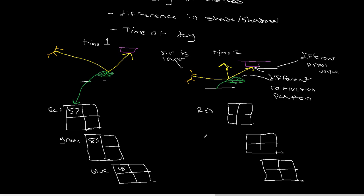Now over here at time two, some of the energy is being lost because of the different reflection pattern, so it's going to have values of 35, 52, and 37 for red, green, and blue. Even though we know that this leaf and this leaf are the same leaf — the surface has not changed, no actual change has occurred — simply because we've changed the position of the sun, we've changed that reflection pattern and changed the pixel values. You can see that they've changed quite dramatically: a 20 to 30 pixel value difference due to nothing more than this change in geometry.